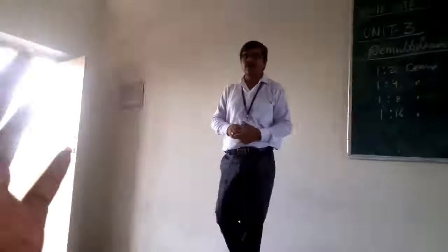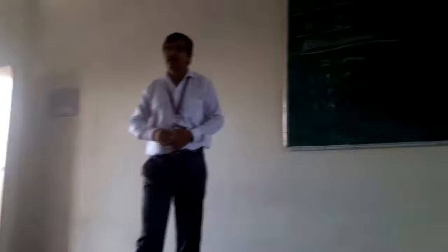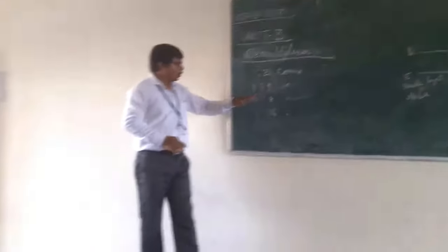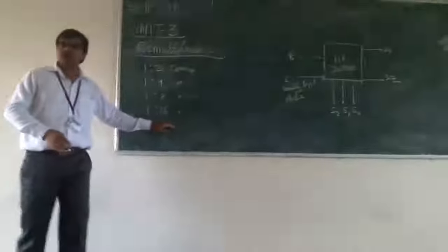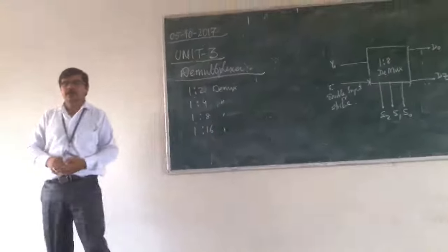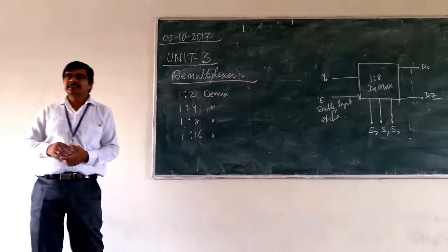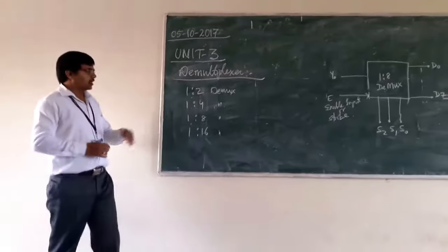Say suppose if you are going for the types of your demultiplexer, you can have 1 is to 2 demultiplexer, 1 is to 4, 1 is to 8, 1 is to 16. These are some examples of your demultiplexer.